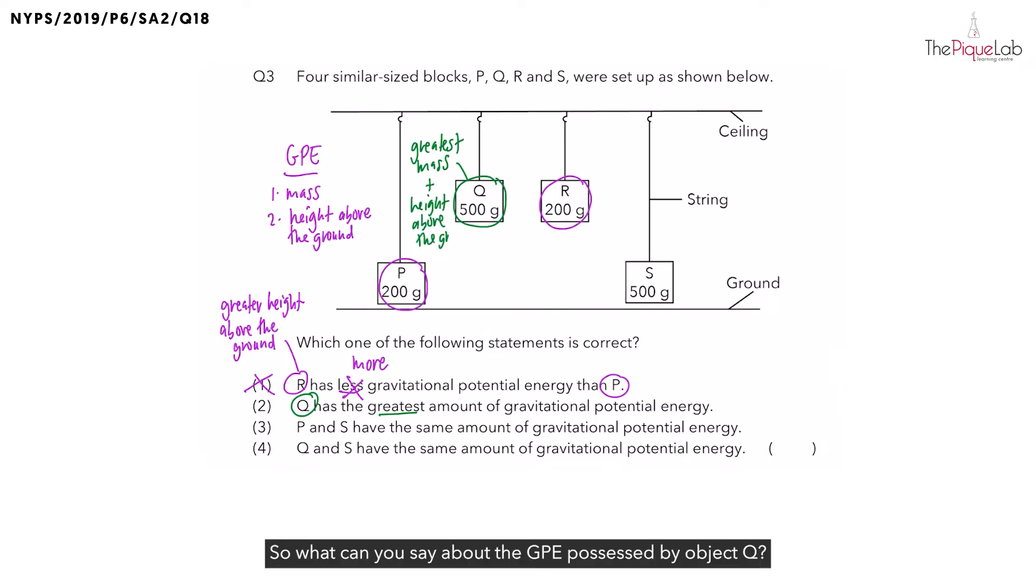So what can you say about the GPE possessed by object Q? Since it has the greatest mass and height above the ground, object Q would have the most GPE. So is statement 2 correct? Statement 2 is correct. But let's take a look at statement 3 just to confirm our answer.